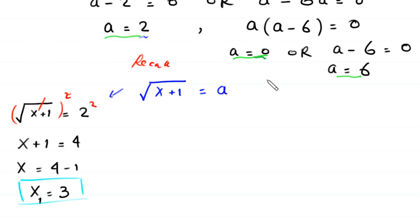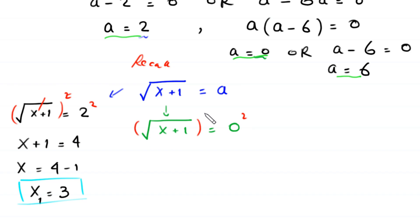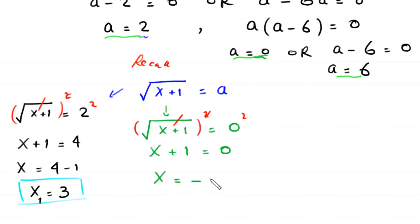When a is 0, square root of (x+1) equals 0. Squaring both sides: x plus 1 equals 0. Moving 1 to the right hand side: x equals negative 1. This is the second solution of this equation.